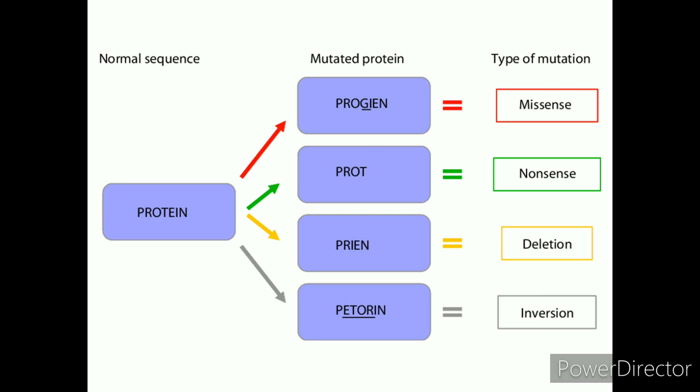Silent. If a base substitution occurs in the third position of the codon, there is a good chance that a synonymous codon will be generated. Thus, the amino acid sequence encoded by the gene is not changed and the mutation is said to be silent.